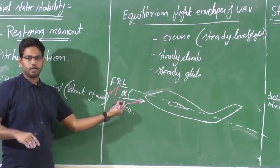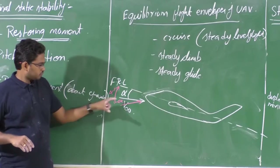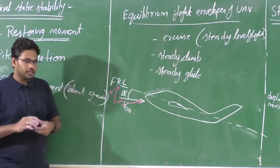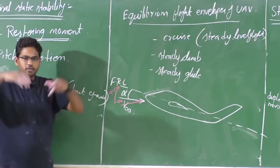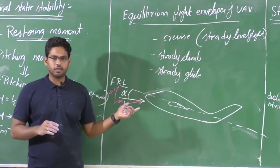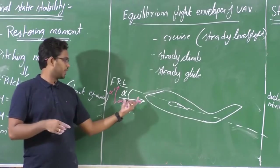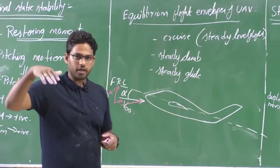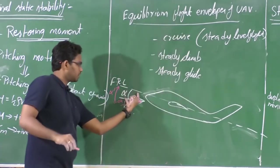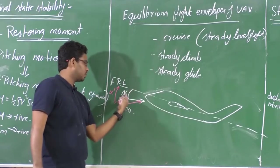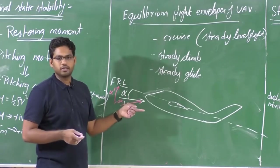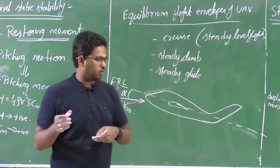Now say there is a small disturbance — a small gust that increases the angle of attack to a new value α′. There is an incremental change in alpha. The initial equilibrium condition is now changed. This change in angle of attack will change the aerodynamic forces, which in turn change the moment as well. The change in pitching moment should be such that the aircraft returns to the original alpha. We are talking about the equilibrium state when the aircraft is maintaining a certain alpha — the aircraft must return to that particular alpha once it encounters a disturbance. That is when we can say the aircraft is at least longitudinally statically stable.